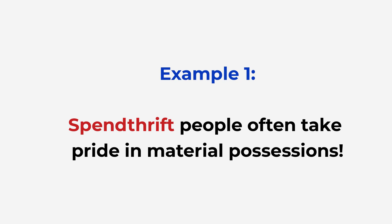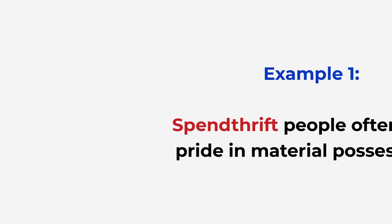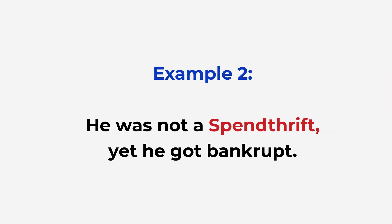Example 2: He was not a spendthrift, yet he got bankrupt. Means waae kharchila nahi tha, phir bhi waae bankrupt — yaani ki kangal ho gaya.